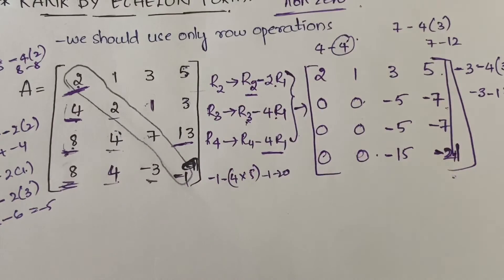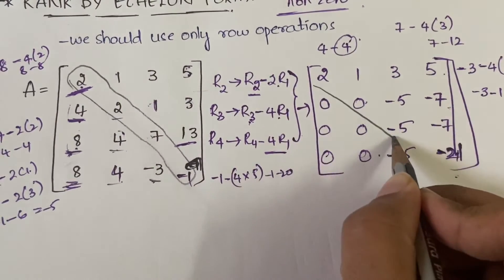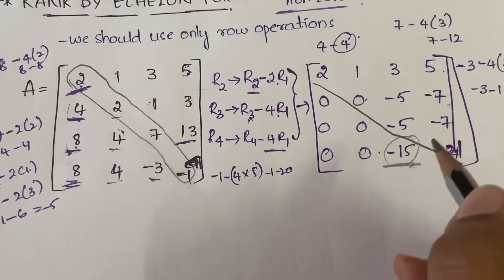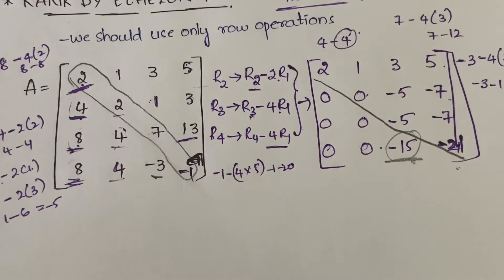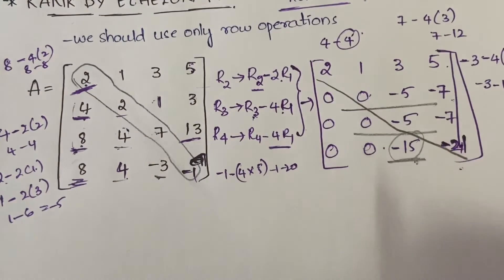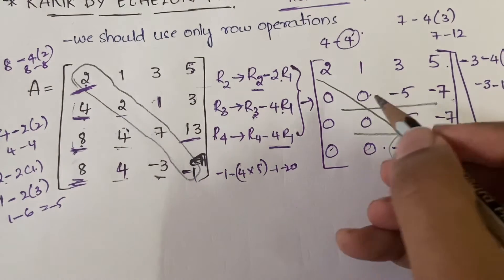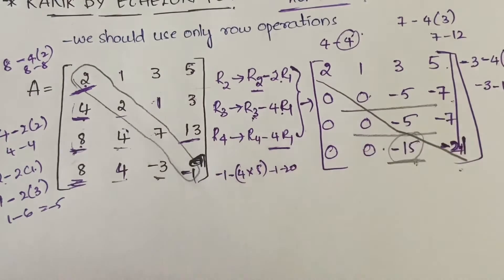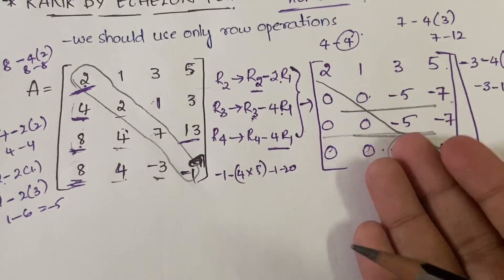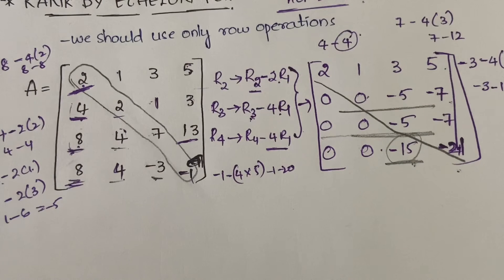Now let us identify the diagonal again. All elements below the diagonal are 0s, except for one element. Our target is to make that one also 0. Notice that R2 and R3 are identical, so we can make R3 entirely 0 by subtracting R2 from R3. It's not just that elements below the diagonal must become 0 — if there are any further possibilities to make rows 0, you can do that too.